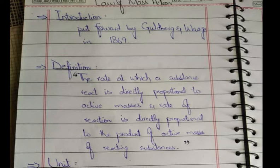This law was put forward in 1869. According to the definition of this law, the rate at which substances react — reactants — is directly proportional to the active masses. Active masses means the concentration you are using, how many moles you are using, how many numbers of reactants you are using. And the rate of reaction is directly proportional to the product of the active masses of the reactant substances.